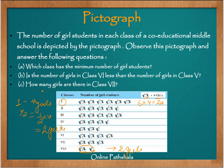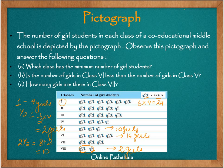Is the number of girls in class 6 less than in class 5? For class 6, there are 4 pictures: 4 multiplied by 4 equals 16 girls. For class 5, there are 2 complete symbols and 1 half: 2 fours are 8, plus half meaning 2, giving 10 girls. So the answer is no — class 6 has 16 girls and class 5 has 10 girls.